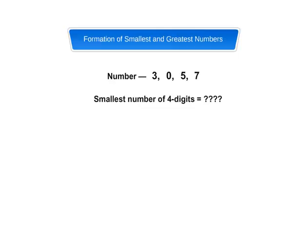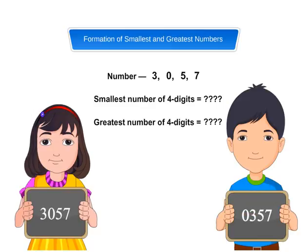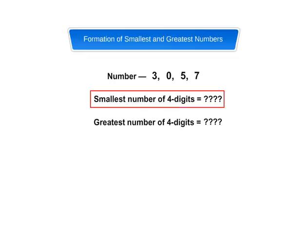Let us now take 3, 0, 5, and 7, and form the smallest and greatest four-digit numbers using all the given digits only once. Applying the rule explained above, Neelima and Manjeet formed the smallest four-digit number as 3,057 and 0,357 respectively — but 0 on the extreme left has no meaning. So, the correct smallest four-digit number was formed by Neelima. Thus, the smallest four-digit number of the given digits is 3,057, and the greatest four-digit number is 7,530.